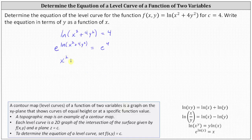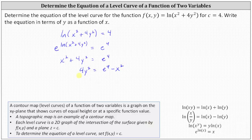We now have x² + 4y² = e⁴. Since our goal is to solve for y, we subtract x² on both sides, which gives us 4y² = e⁴ - x². Next, we isolate y² by dividing both sides by four, giving us y² = (e⁴ - x²) / 4.